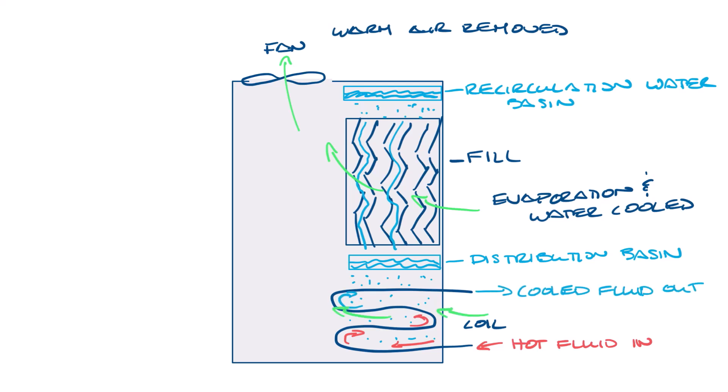Air is also being pulled through this section by the fan to be rejected out the top of the unit. The recirculation water is captured and pumped back to the top of the unit and the process starts over again.